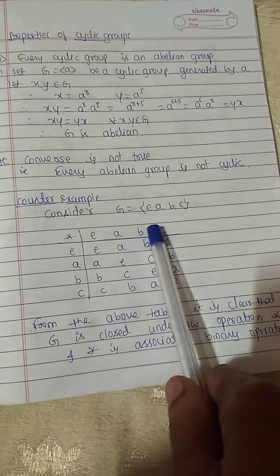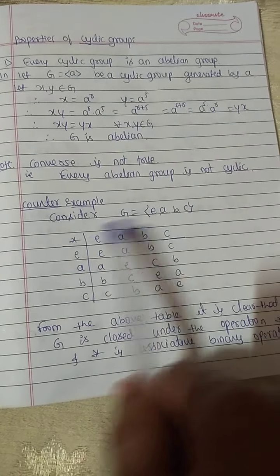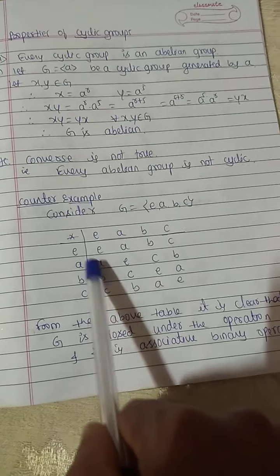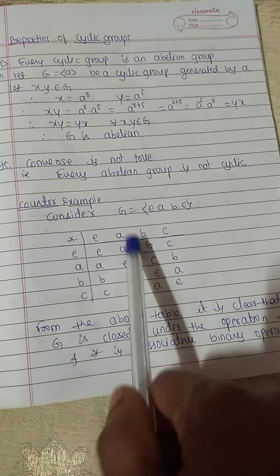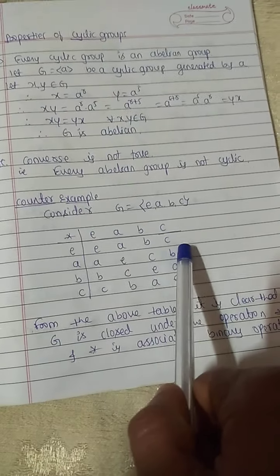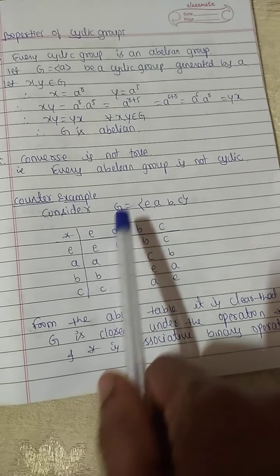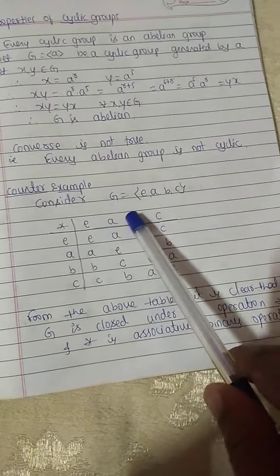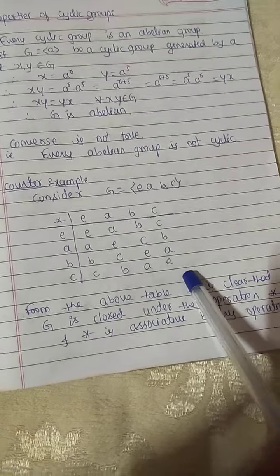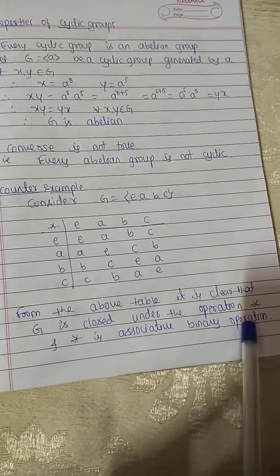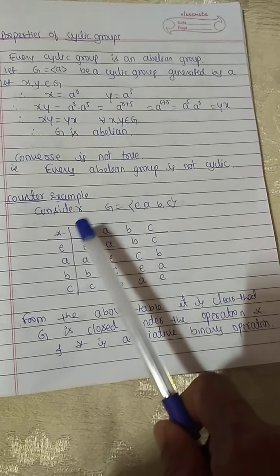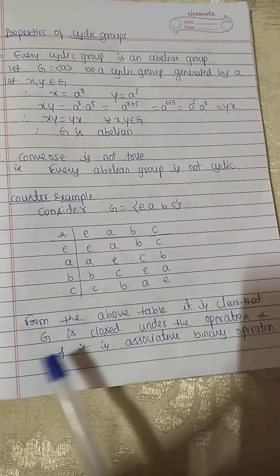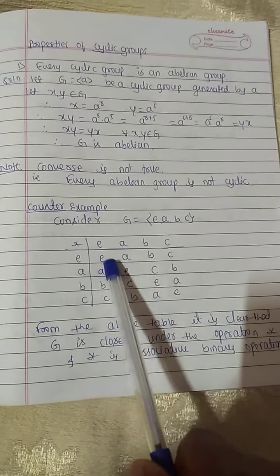The converse is not true — not every abelian group is cyclic. For example, suppose G equals {E, A, B, C} with the operation table: E is the identity, each element is its own inverse, and the table is symmetric about the principal diagonal. From the table, G is closed under the operation star, it is associative, E is the identity, and the inverse of each element is itself. By this property, G star is an abelian group.